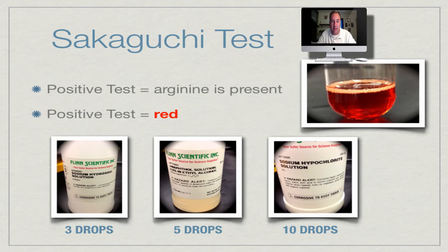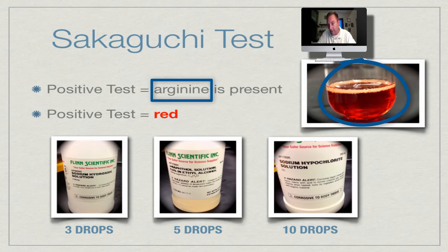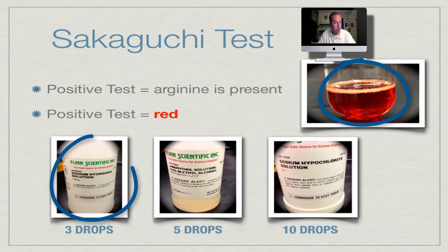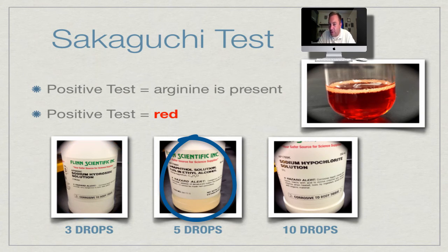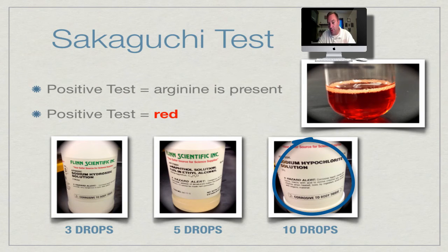The Sakaguchi test tests for the amino acid arginine. A positive result gives a red color, as shown in the picture. You'll be using three fluids: sodium hydroxide (a base), alpha-naphthol — think naphthalene used in paint thinner, so expect a paint thinner smell — and sodium hypochlorite, which is bleach. Follow the directions carefully. If all goes well, you may see one or two test tubes turn red.